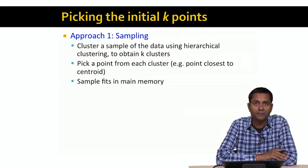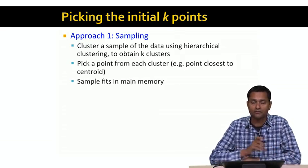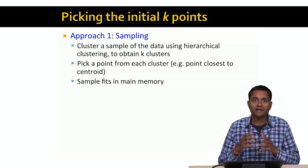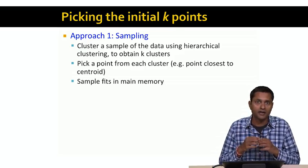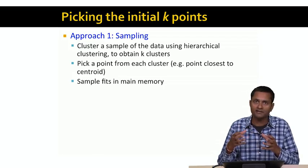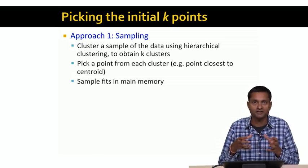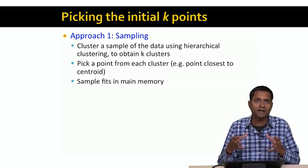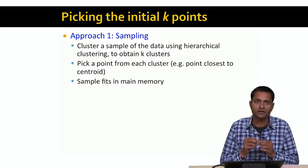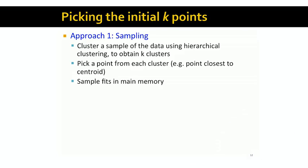The first approach to picking the initial k points is sampling. Remember, the data set is really large, so we can't run a complicated algorithm like hierarchical clustering on all of it. But we can sample the data, take a smaller sample, and then run hierarchical agglomerative clustering on that sample until we obtain k clusters. Then we pick a point from each of the k clusters — for example, the point closest to the centroid — and call those our initial k centroids.